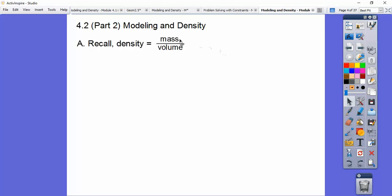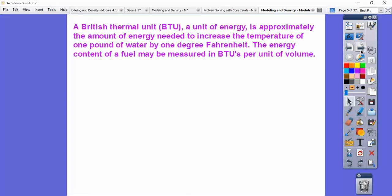Recall, density was mass divided by volume. If we wanted to find the population density, it would be population divided by area.